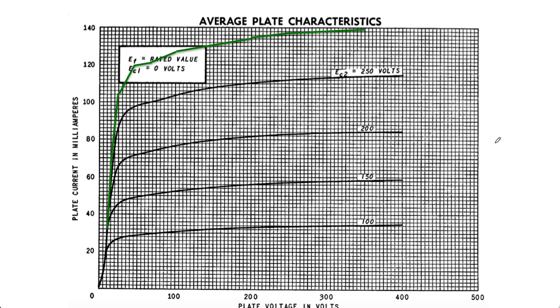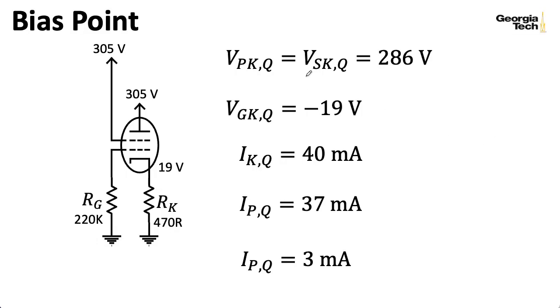So as an aside, in previous lectures, when I said the screen-to-cathode voltage was the same as or less than the plate-to-cathode voltage, I should have emphasized that's referring to the DC bias points. The plate-to-cathode voltage itself, of course, swings around all over the place. That's how we get an amplifier.